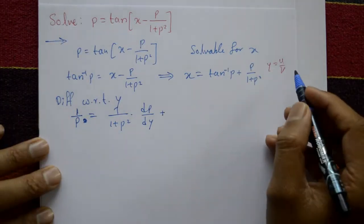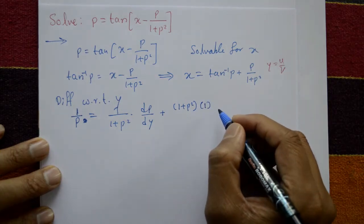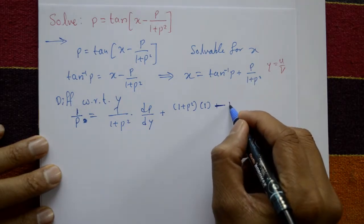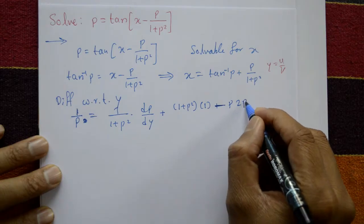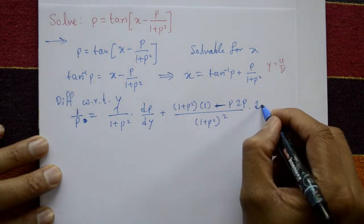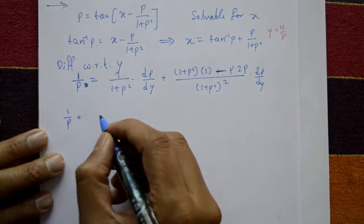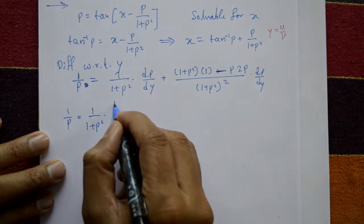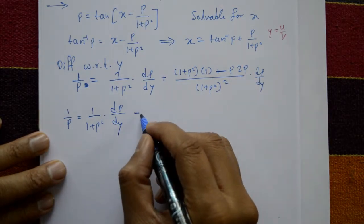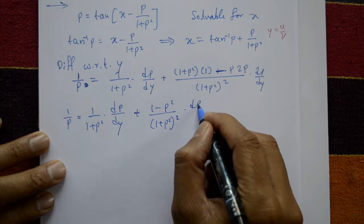Applying the quotient rule to p/(1 + p²): differentiate the numerator p gives 1, times (1 + p²), minus p times the derivative of (1 + p²) which is 2p, all divided by (1 + p²)². This simplifies the numerator to 1 + p² - 2p² = 1 - p², so the result is (1 - p²)/(1 + p²)² times dp/dy.